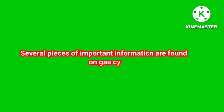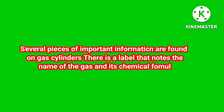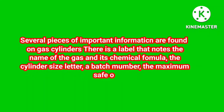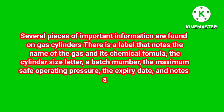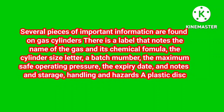Several pieces of important information are found on gas cylinders. There is a label that notes the name of the gas and its chemical formula, the cylinder size letter, a batch number, the maximum safe operating pressure, the expiry date, and notes on storage, handling and hazards.